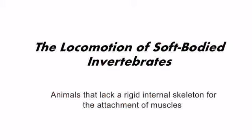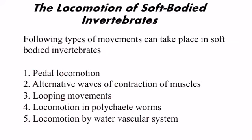The locomotion of soft-bodied invertebrates is the main topic of today's lecture. Soft-bodied invertebrates are animals that lack a rigid internal skeleton for the attachment of muscles. Different types of movements can take place in soft-bodied invertebrates. These include pedal locomotion, alternating waves of contraction of muscles, looping movements, locomotion in polychaete worms, and locomotion by water vascular system.